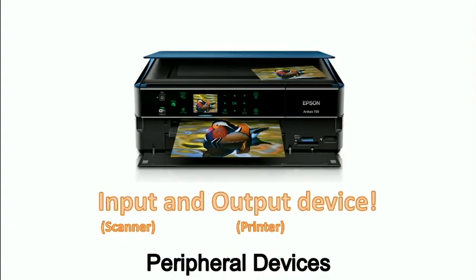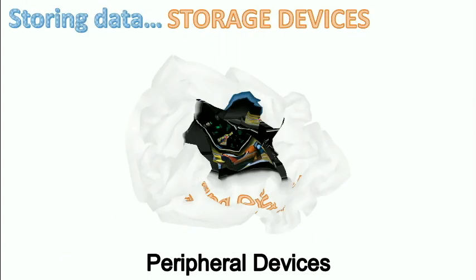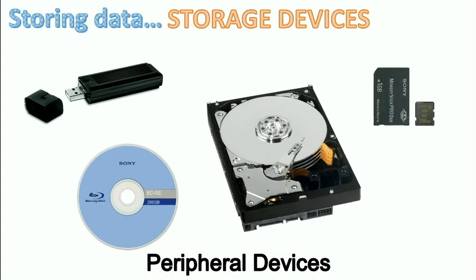Now, what about storing data? There are different types of storage media. The most common is probably the USB pen drive, though people often lose these. There's also the hard drive, found in most computers. Some hard drives are solid-state, meaning they have no moving parts and are very fast. You also have SD cards, which are found in cameras and phones.